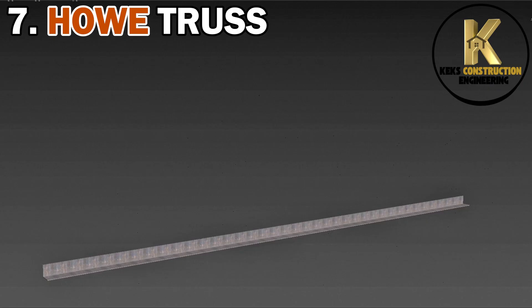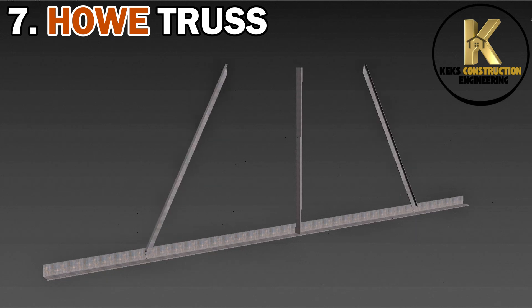7. Howe Truss. This has vertical tension and diagonal compression members, suitable for heavy loads in bridges and industrial buildings.